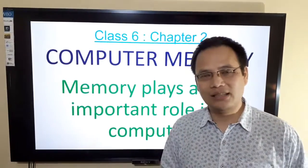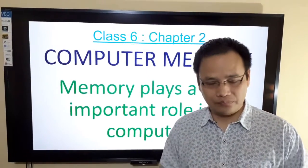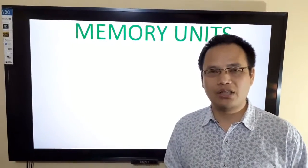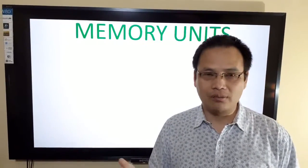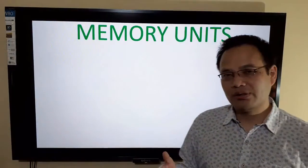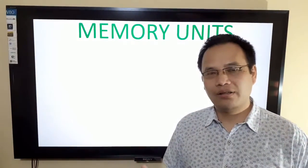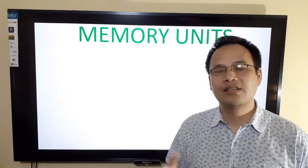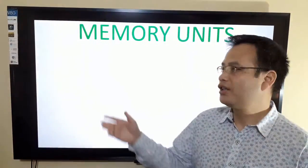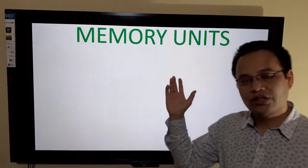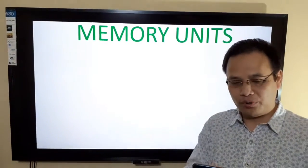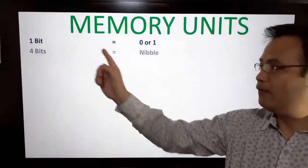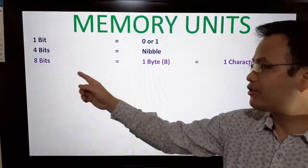Just as solids are measured in grams and kilograms and liquids in milliliters and liters, computer memory can also be measured in bits and bytes. A bit, short for binary digit, is the smallest unit of computer memory. This table will show us the details of the units of computer memory. A bit is equal to zero or one, and four bits make a nibble.